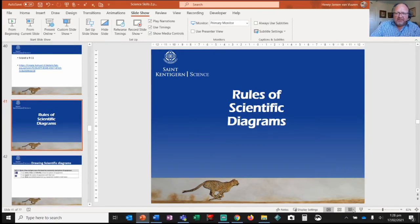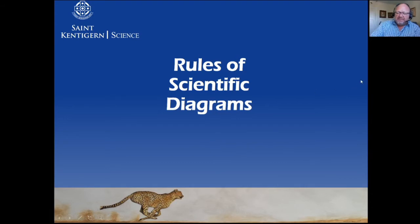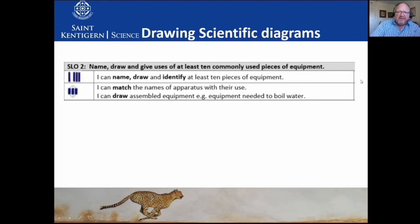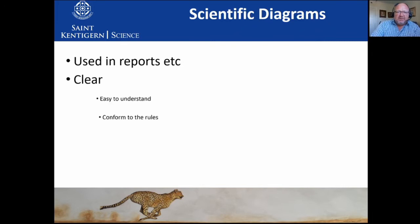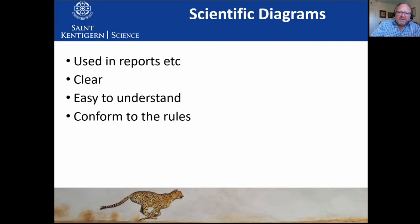Now back to our lesson — rules of scientific diagrams. When we're drawing scientific diagrams, at the end of this you should be able to draw assembled equipment — for instance, the equipment needed to boil water, and that's going to be your homework. Scientific diagrams used in reports have to be clear, easy to understand, and conform to the rules. The reason we have these rules is because not all of us are very artistic — scientific diagrams make it possible for everybody to be able to draw.